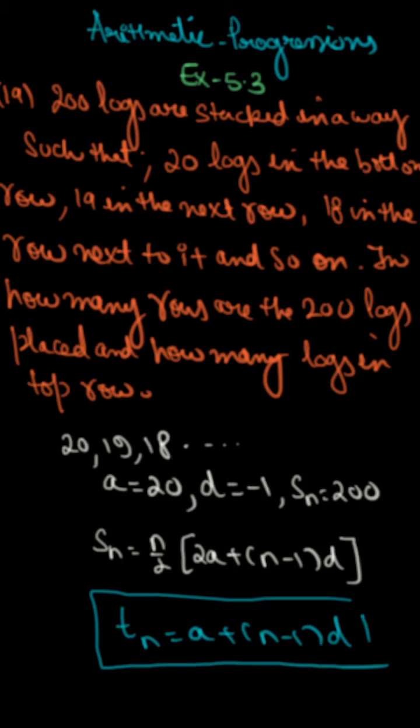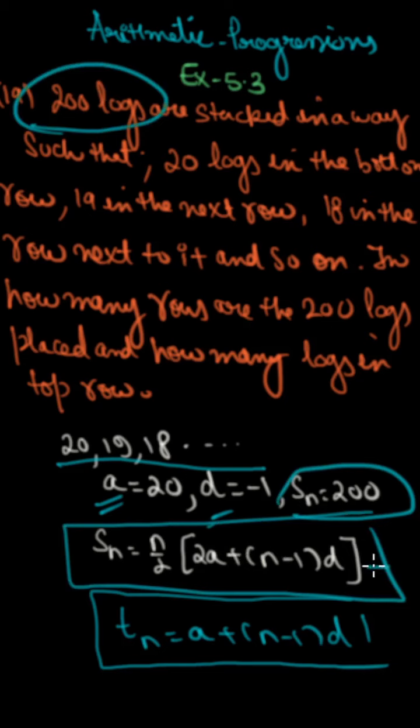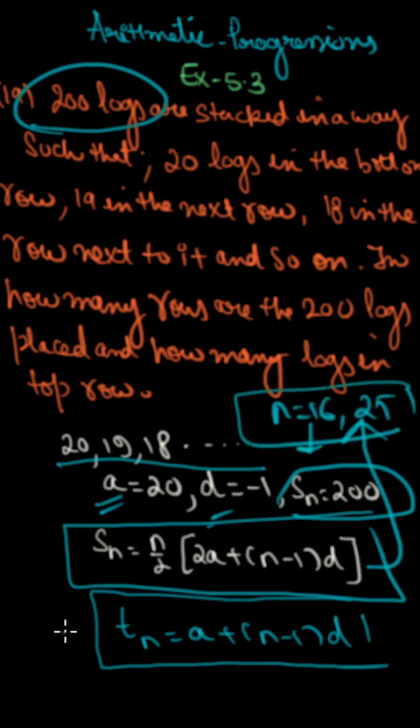Put this formula: Sn = n/2[2a+(n-1)d]. This gives a quadratic equation in n. You have to solve for two values. One will be 16 and another 25. Now put these two values in the formula.